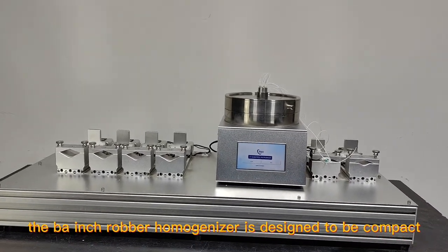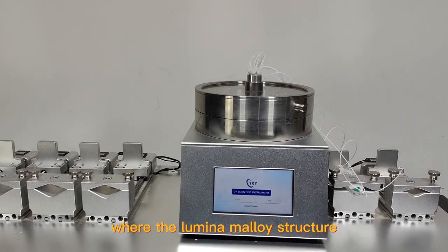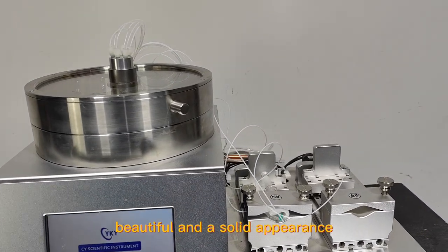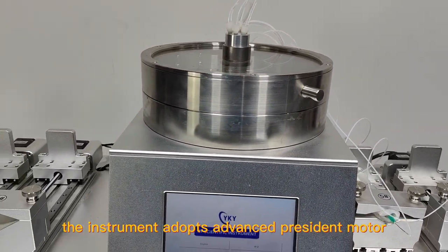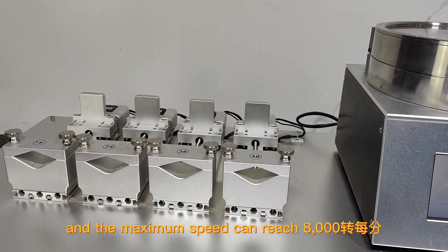The bar-inch rubber homogenizer is designed to be compact, with aluminum alloy structure and stainless steel cavity. Beautiful and solid appearance, the instrument adopts advanced pre-silent motor, and the maximum speed can reach 8,000 RPM.